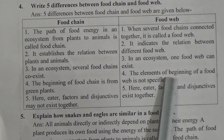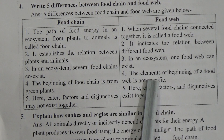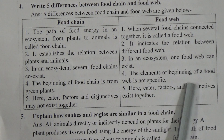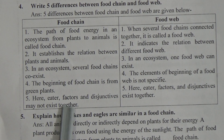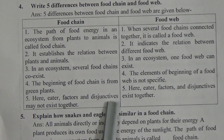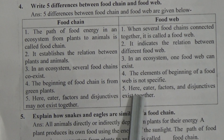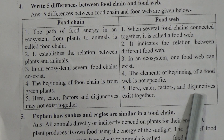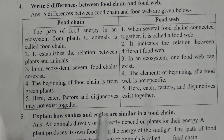Number five — Food chain: Biotic factors and abiotic factors may not exist together. Food web: Biotic factors and abiotic factors exist together.